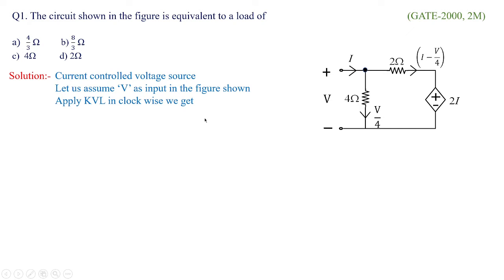Applying KVL in clockwise direction for this closed circuit, you have V, you have I minus V by 4 multiplied with 2 becomes another drop, and you have 2i as the dependent voltage source. Applying KVL will give you the value as minus V plus 2 times of I minus V by 4 plus 2i equal to 0. I hope you understood how we have framed this equation. After simplification, we are going to obtain V plus V by 2 equal to 4i. In fact, 3V by 2 equal to 4i and we require the load.